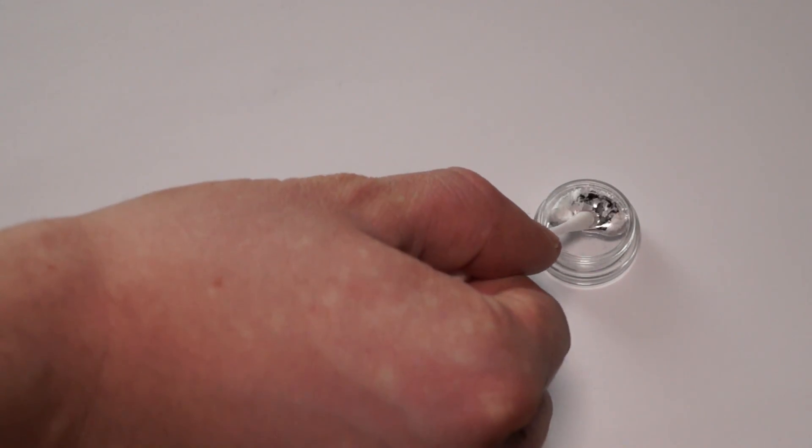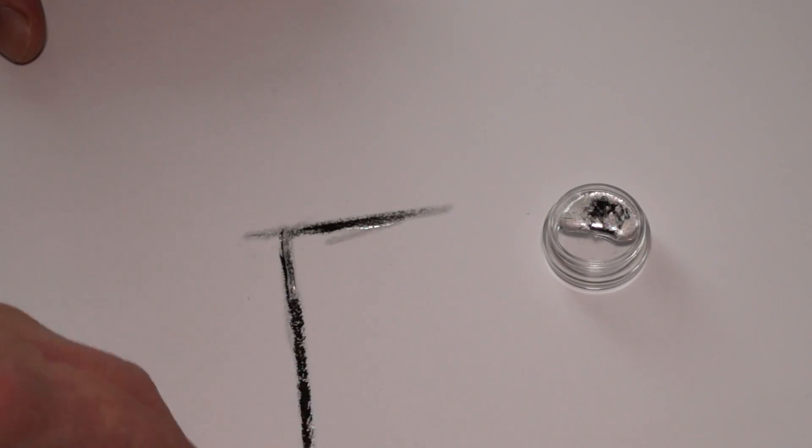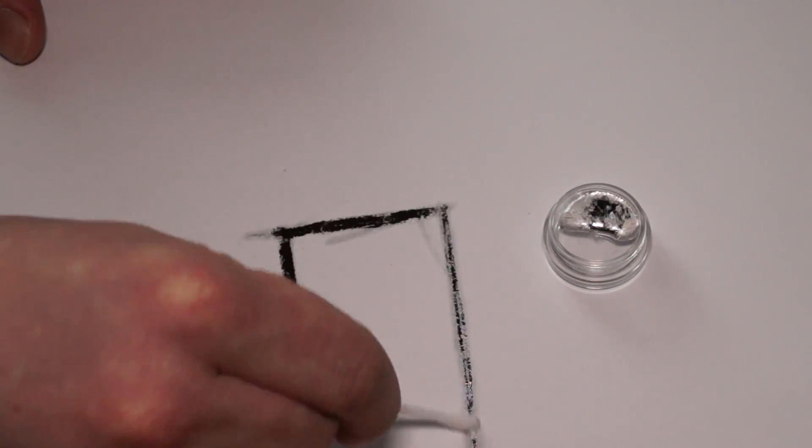If you moisten a cotton swab with this alloy, then we would get a metallic pen, with which you can draw conductive lines on the paper.